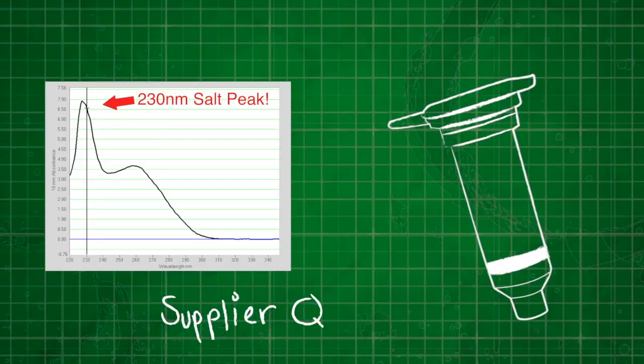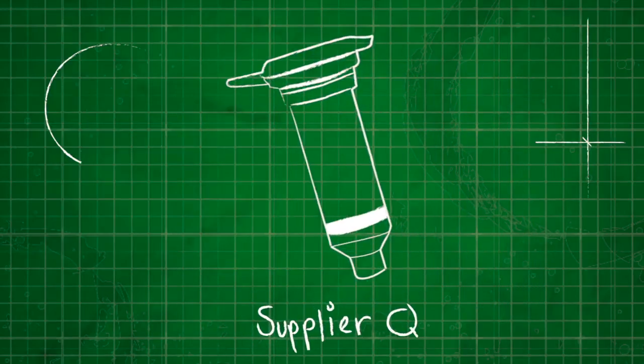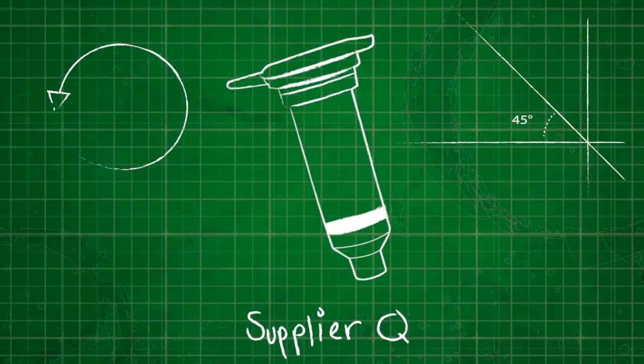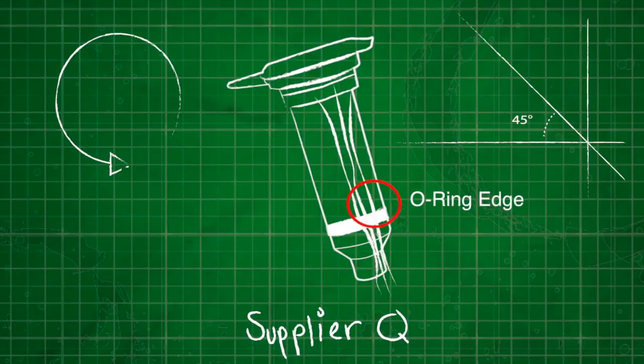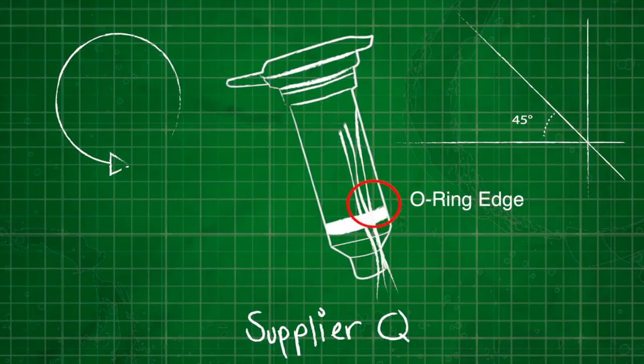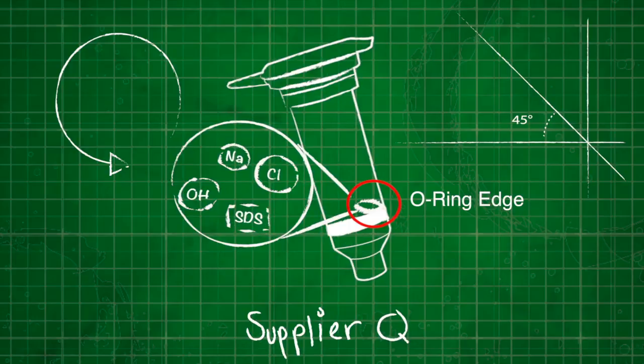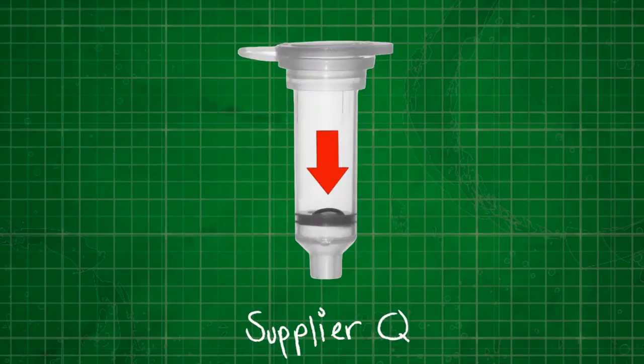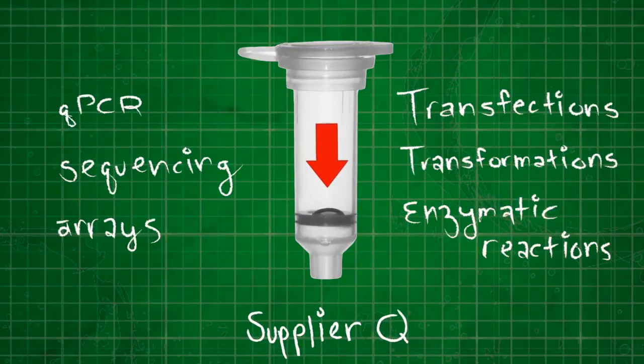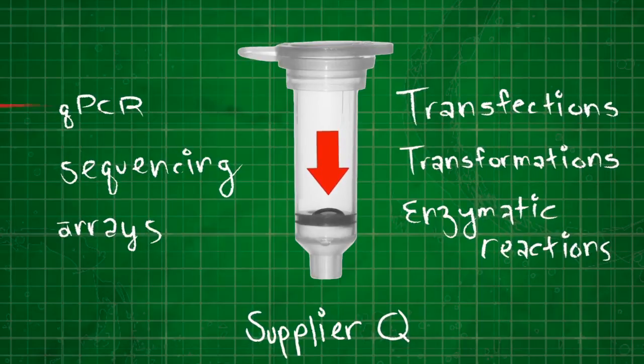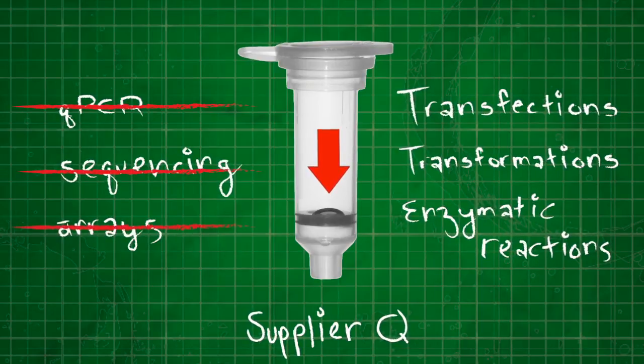How does this happen? Because spin columns go into the centrifuge and are spun at an angle, the o-ring that holds the matrix down allows for retention of buffers and contains salts, detergents, and inhibitors that can potentially affect sensitive downstream applications, such as qPCR, sequencing, arrays, and more.